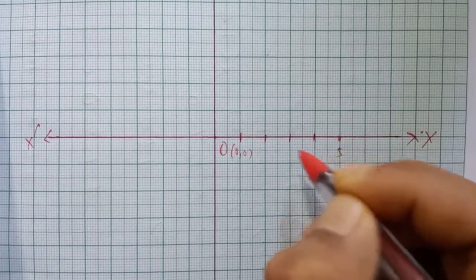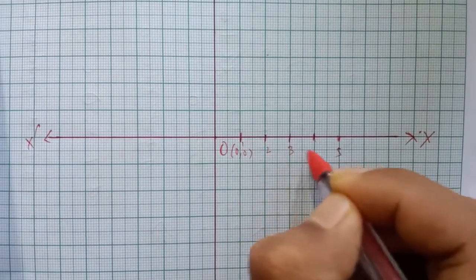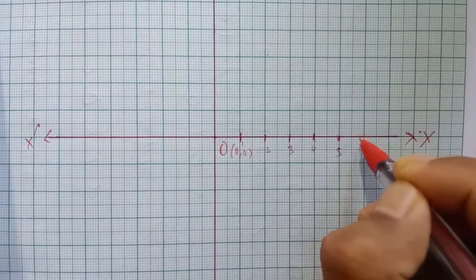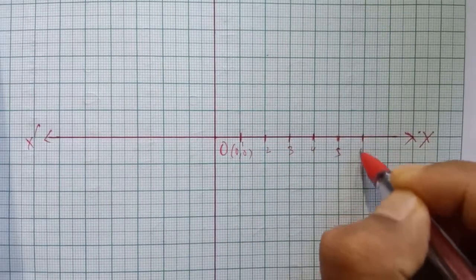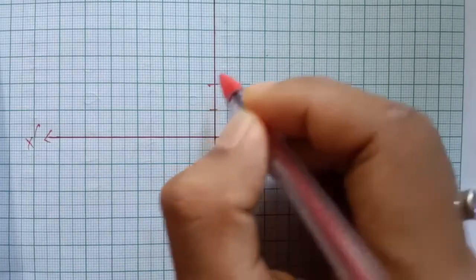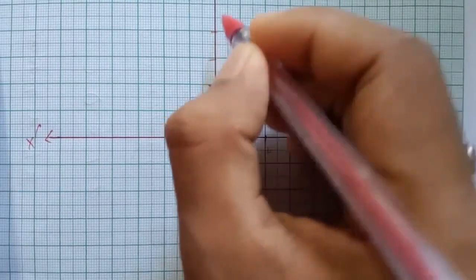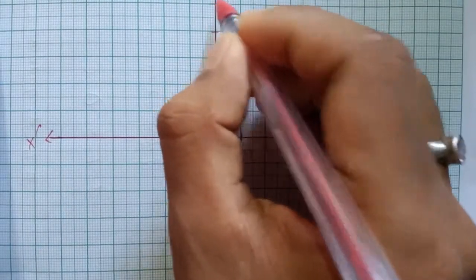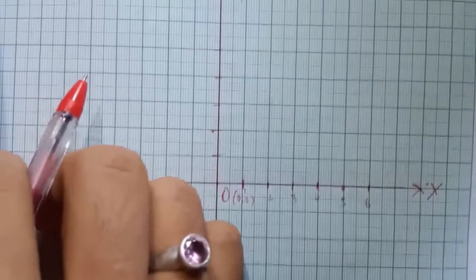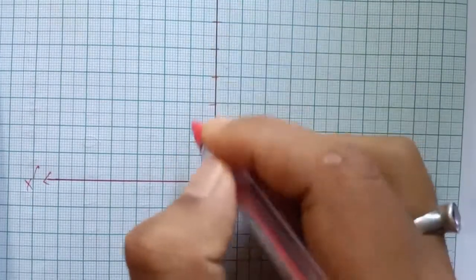So you have to get 5, 6. You have to get 5, 6, 5, 6.